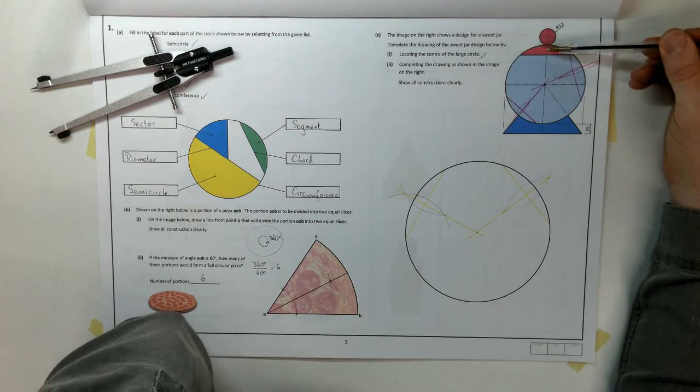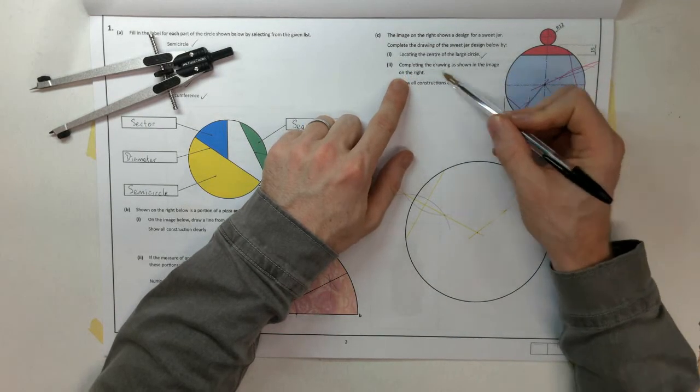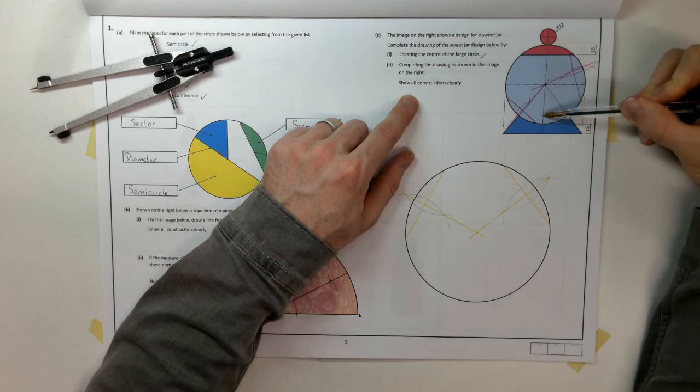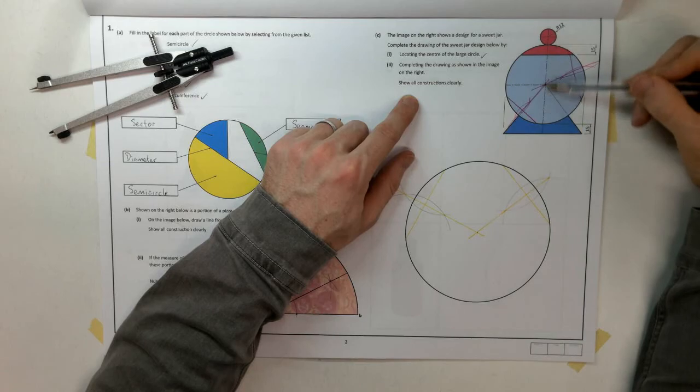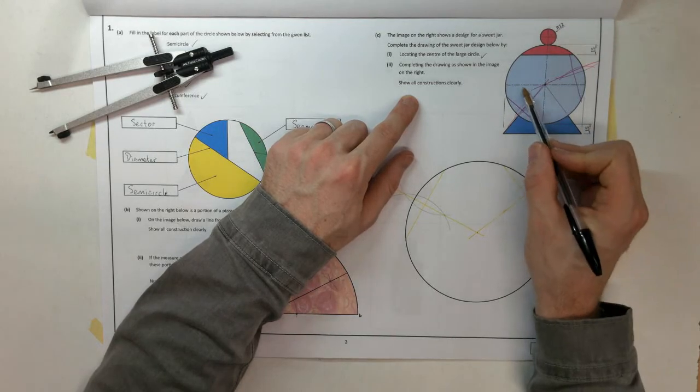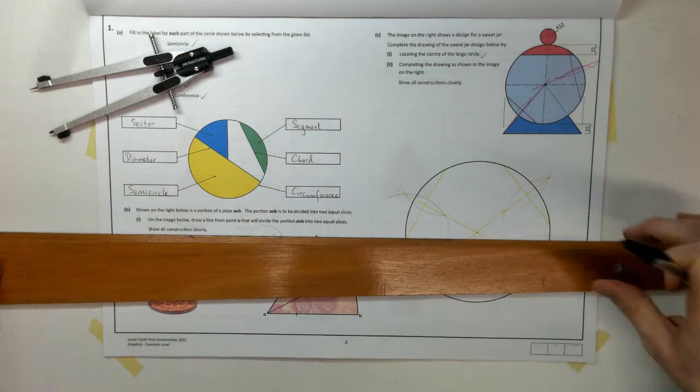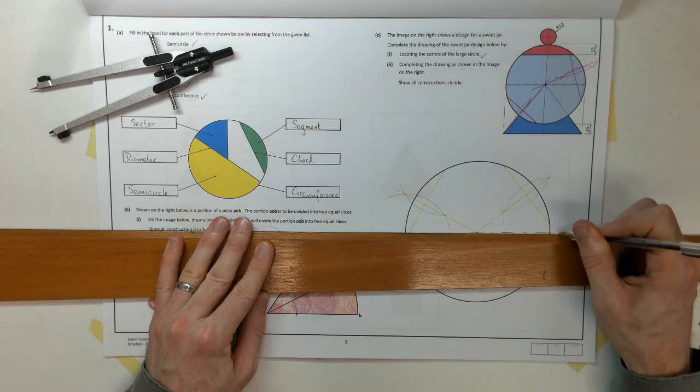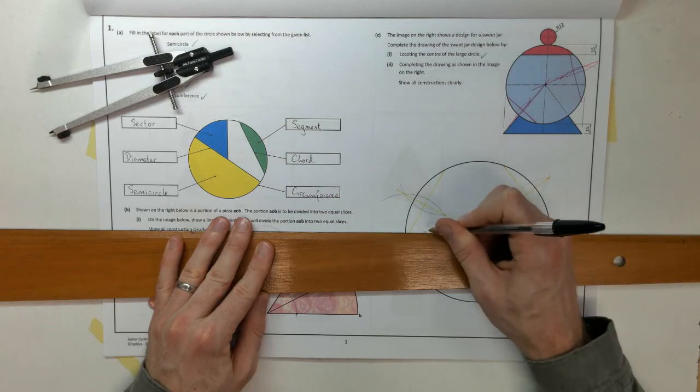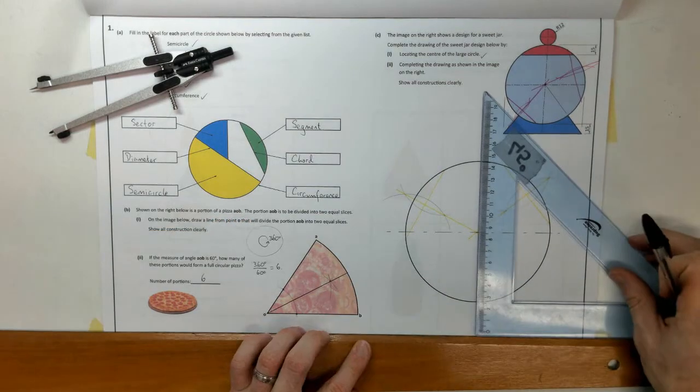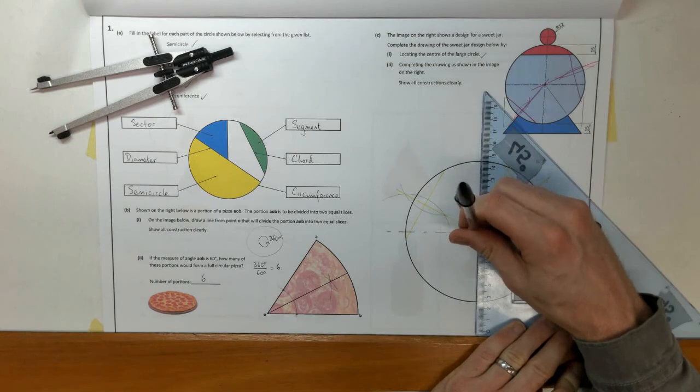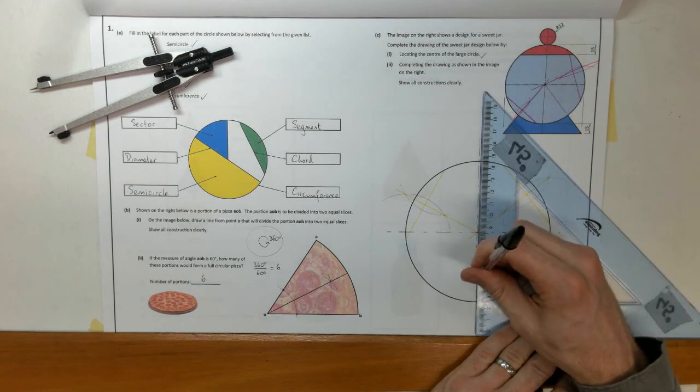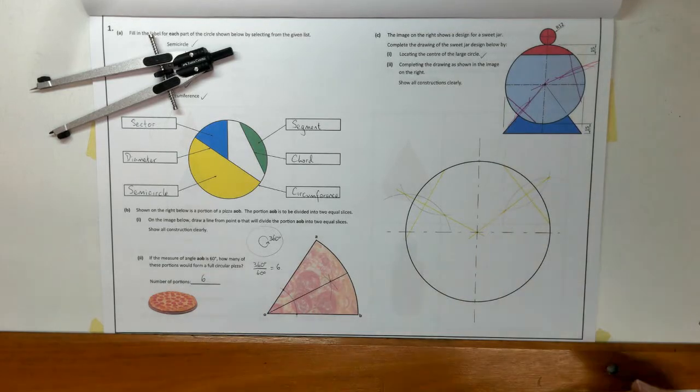Where those two arcs across each other. And I'll extend my bisector until I find my centre point there. So, that's the centre of my large circle. I'll tick that off. Now, looking at the, we'll just continue. Complete the drawing to show the image on the right. And show all constructions clearly. We've got centre line running up along the middle of our page. And that's going to help me to locate some points. So, I'm going to draw those centre lines.